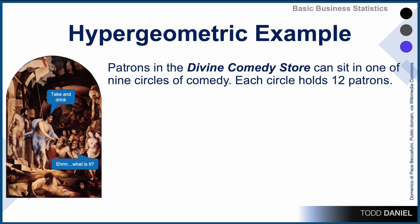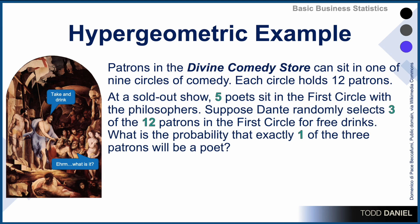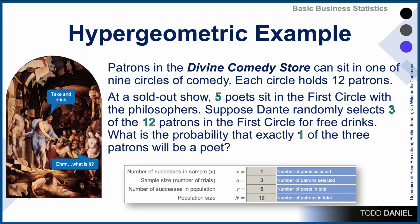Let's take an example from our Business of the Week. Patrons of the Divine Comedy Store can sit in one of the nine circles of comedy, and each circle holds 12 patrons. At a sold-out show — all of the circles are filled — five poets sit in the first circle with the philosophers. Suppose Dante randomly selects three of the 12 patrons in the first circle to give them free drinks. What is the probability that exactly one of the three patrons will be a poet?